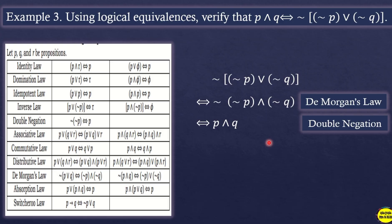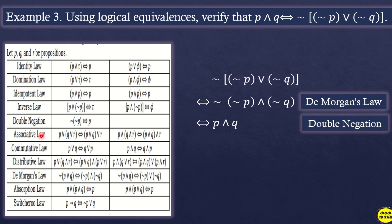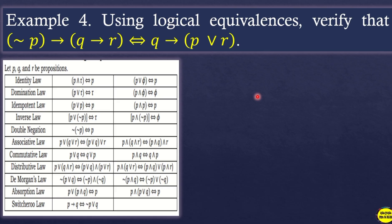After Double Negation we have p∧q. We can also apply the Commutative and Associative Laws as needed. We have now verified that p∧q is equivalent to ¬(¬p∨¬q).